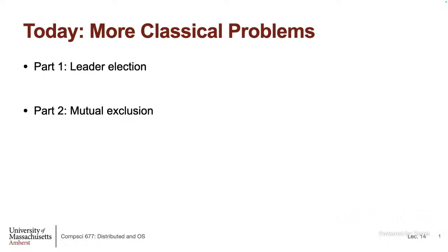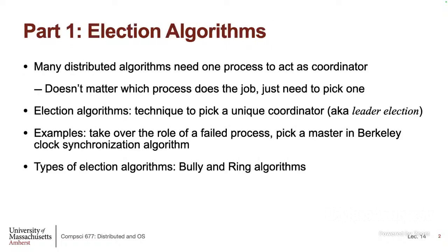Today we have two problems to discuss in distributed systems. One I already introduced last time — I will reintroduce it and do a quick recap, then continue. That's on leader election. The second one is called mutual exclusion — this is where we see how to do distributed locks.